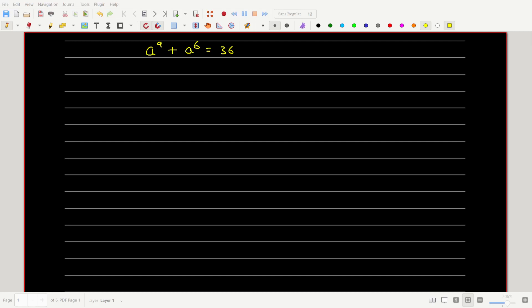Hello friends, in this video we will solve this interesting math olympiad problem. We are given a to the power 9 plus a to the power 6 is equal to 36, and we have to find real values of a.